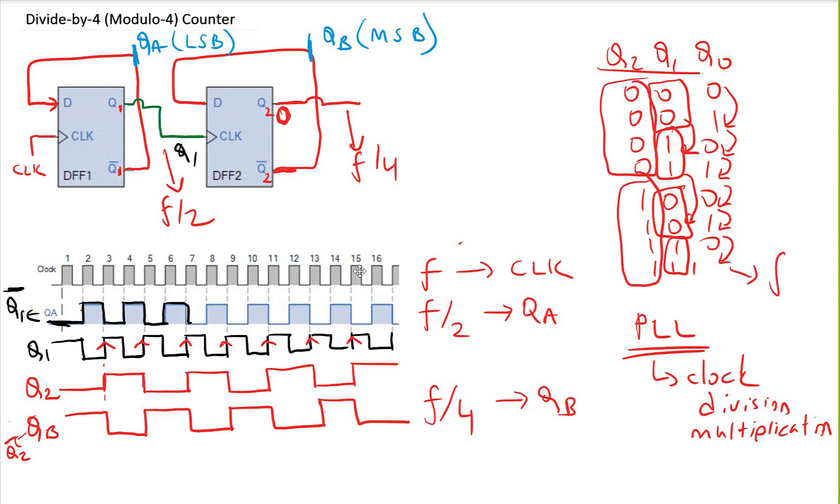If the frequency of this is F, if I use Q1 this will be F over 2. If I use this, it will be F over 4. In a way, you can use the counter bits as a clock divider. That's why the counters could also be used as divide-by-N circuits.